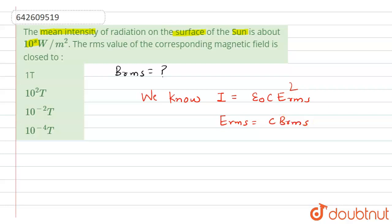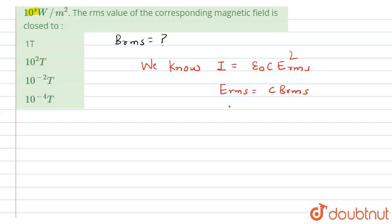Now replace this value of E RMS with C B RMS. So we get I equals to epsilon naught C, and here C square, it will become C cube.